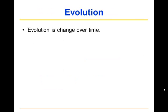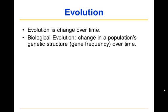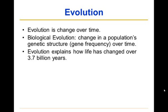We can start off by defining evolution simply as change over time. Many things evolve, from language to car styles to hair styles. When we talk about evolution in this class, we are talking about biological evolution, which is defined as a change in a population's genetic structure over time. Unless I specifically say otherwise, when I use the word evolution I mean biological evolution.